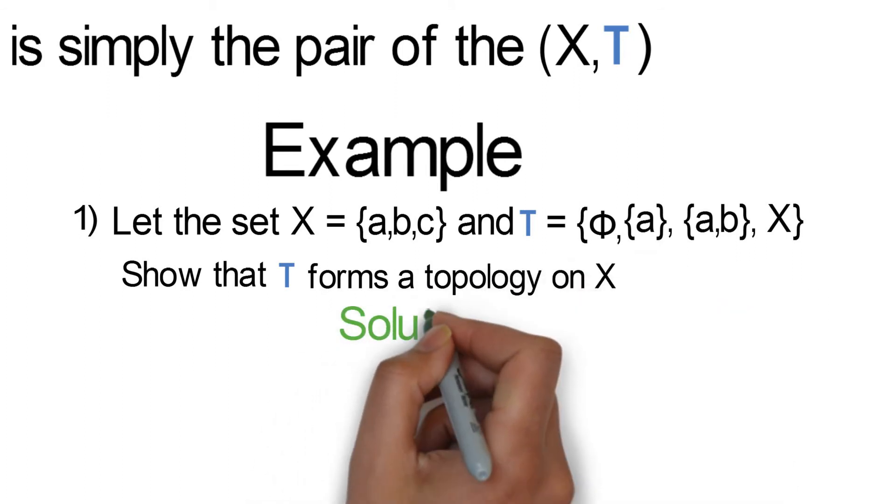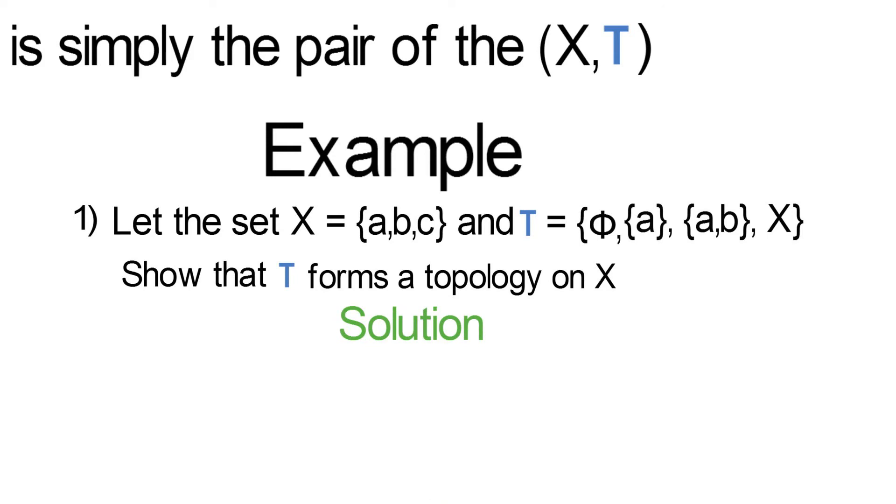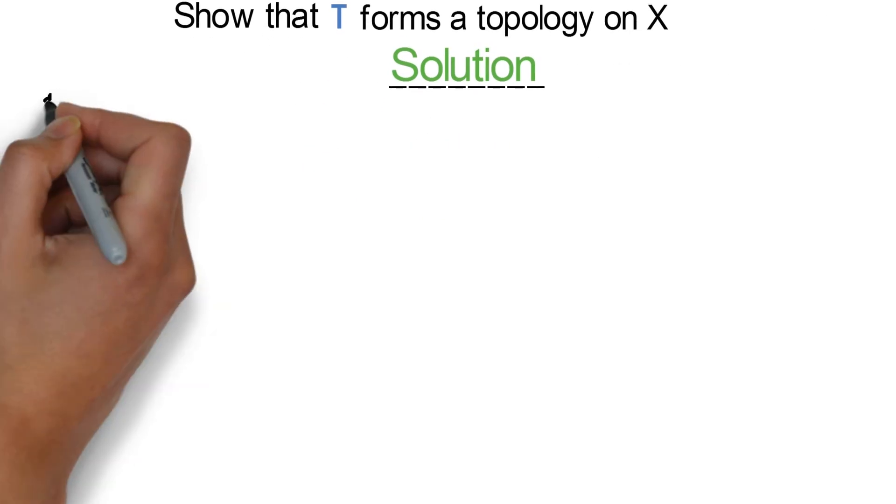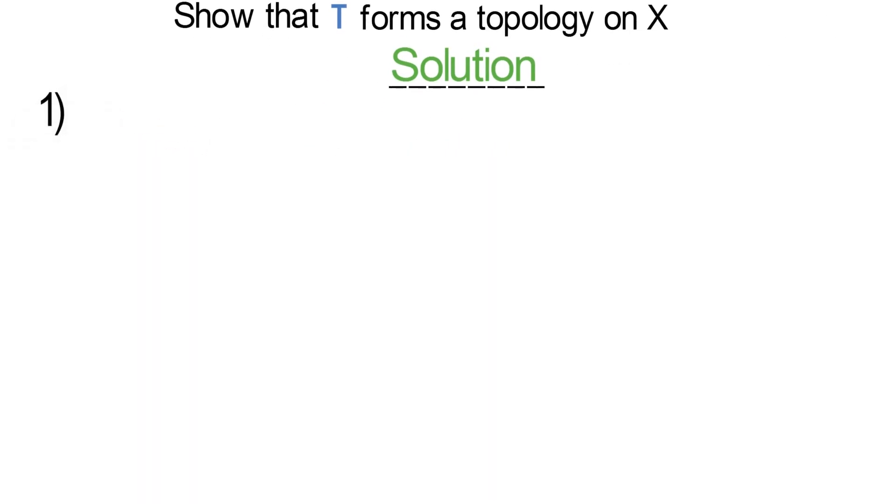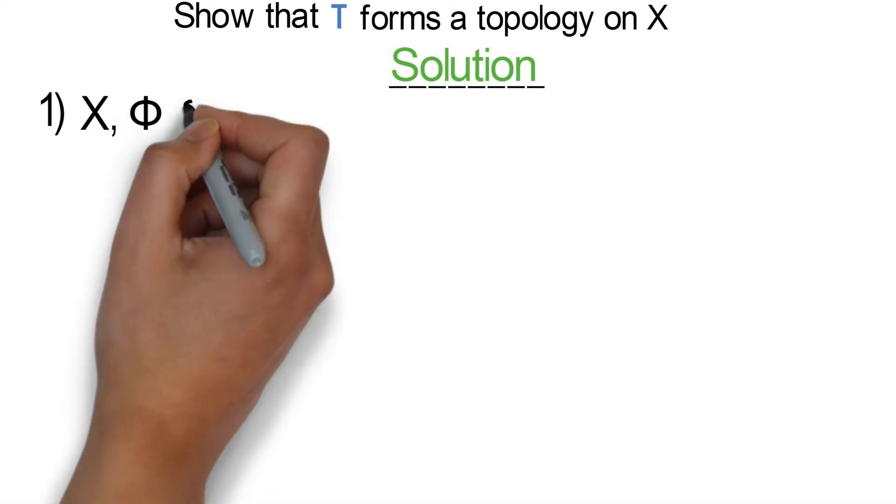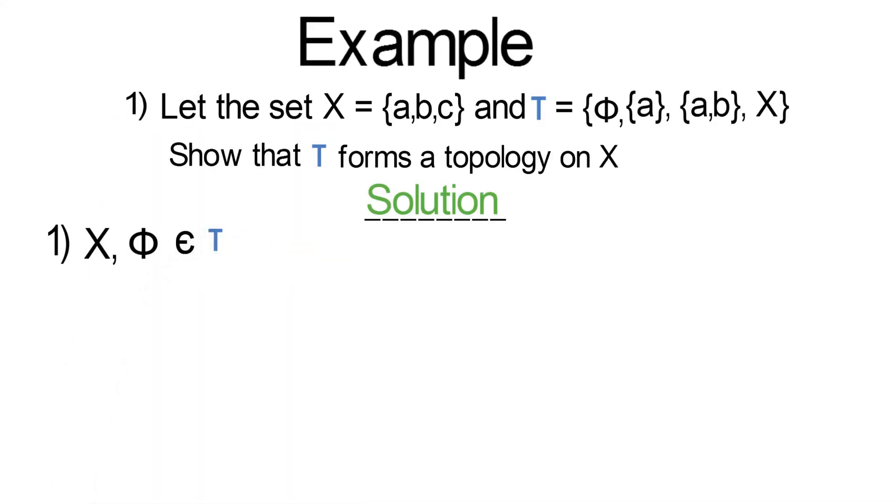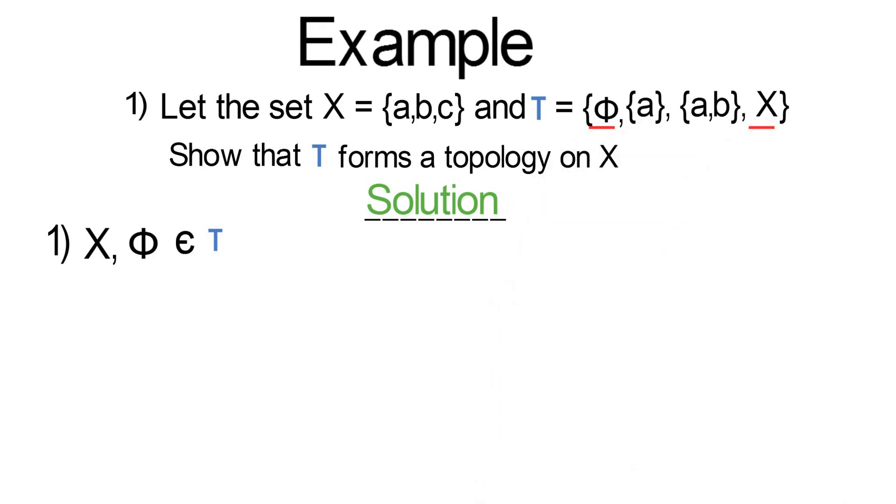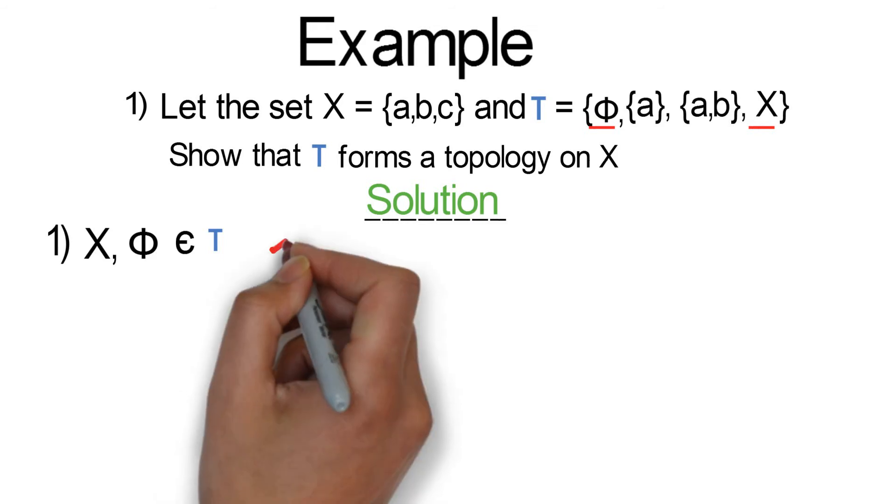Solution: Now to show that tau satisfies the three conditions of a topology. Condition 1 states that the entire set X and the empty set are elements of tau. We can see that this is true from the given elements of tau in the question. So condition 1 holds.